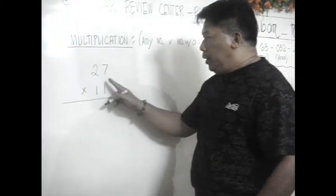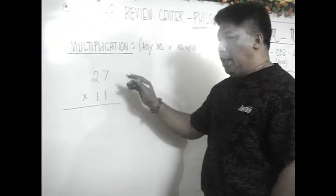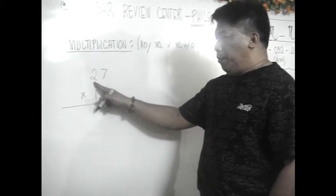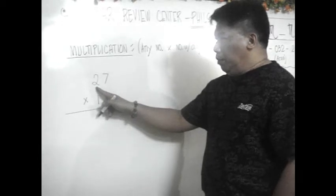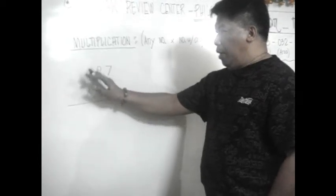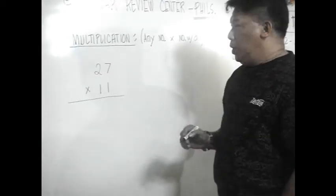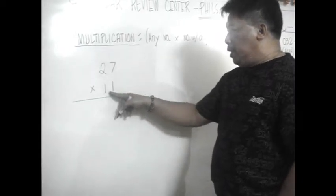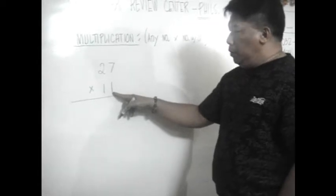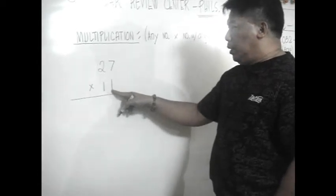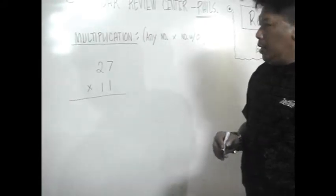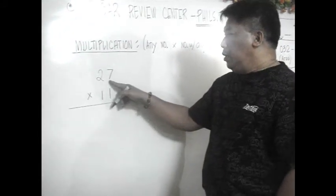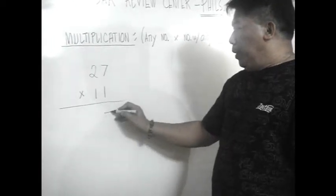Now, how to do it? It is just like this. Since there are two ones here, you need two numbers up to two. Because three cannot be applied because there are only two. So, for example, we have our 27. This is a two digit number against 11 with numbers with one as our multiplier. And there are two ones here.